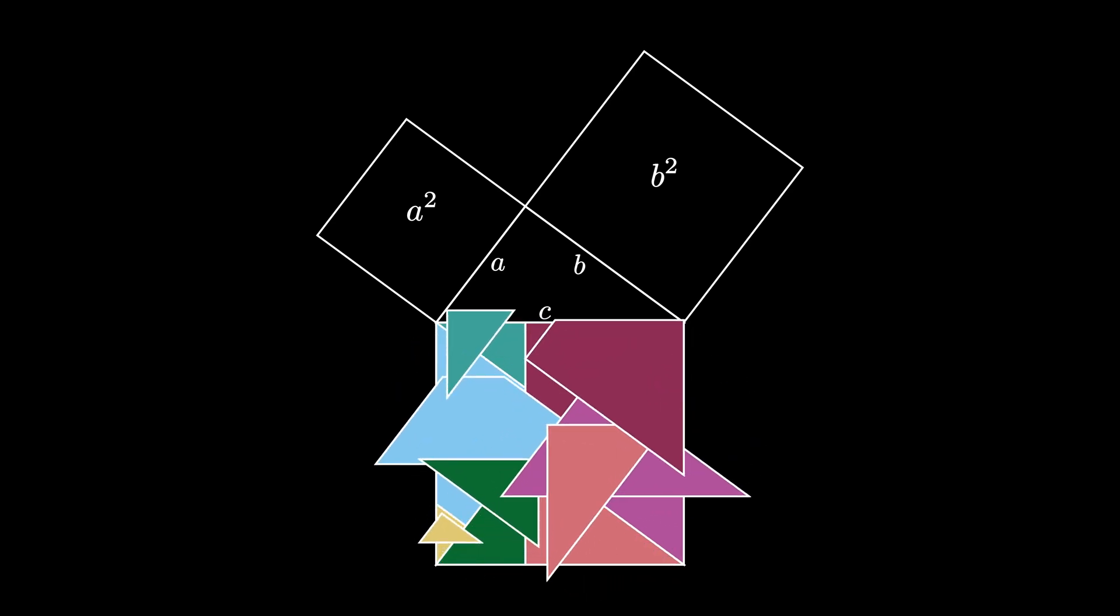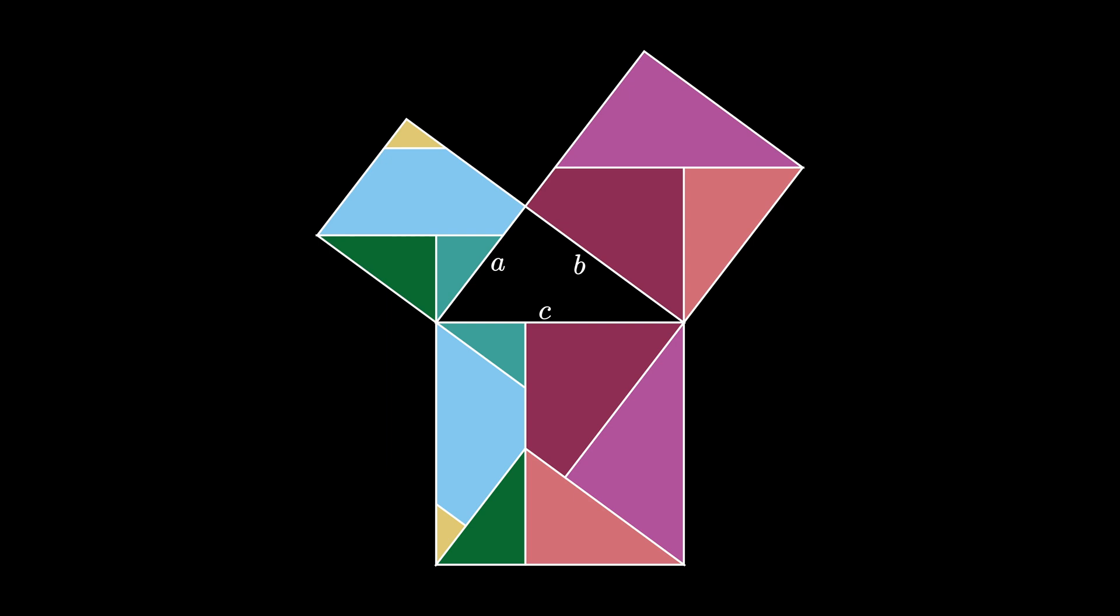From this dissection proof, we see that A squared plus B squared equals C squared by cutting and moving pieces around.